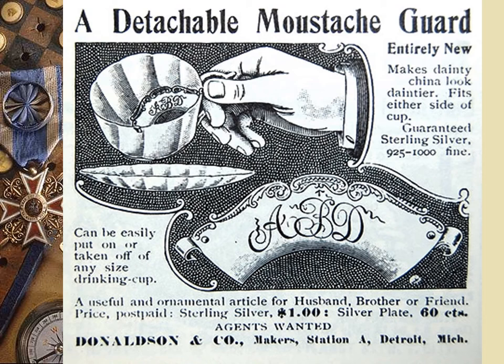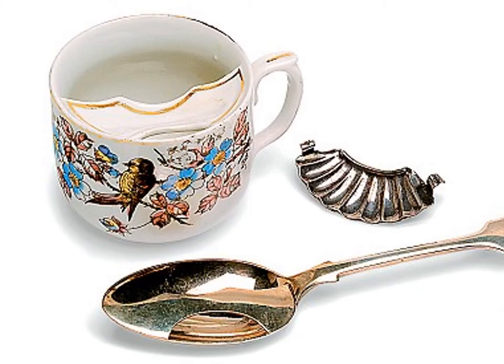By World War I, the U.S., British, German, and Austrian militaries all required a mustache. In fact, most men had a mustache. There was even technology to accommodate that — a mustache guard you could put on your cup so tea or coffee wouldn't drip off your mustache. You can still find these in antique stores today.